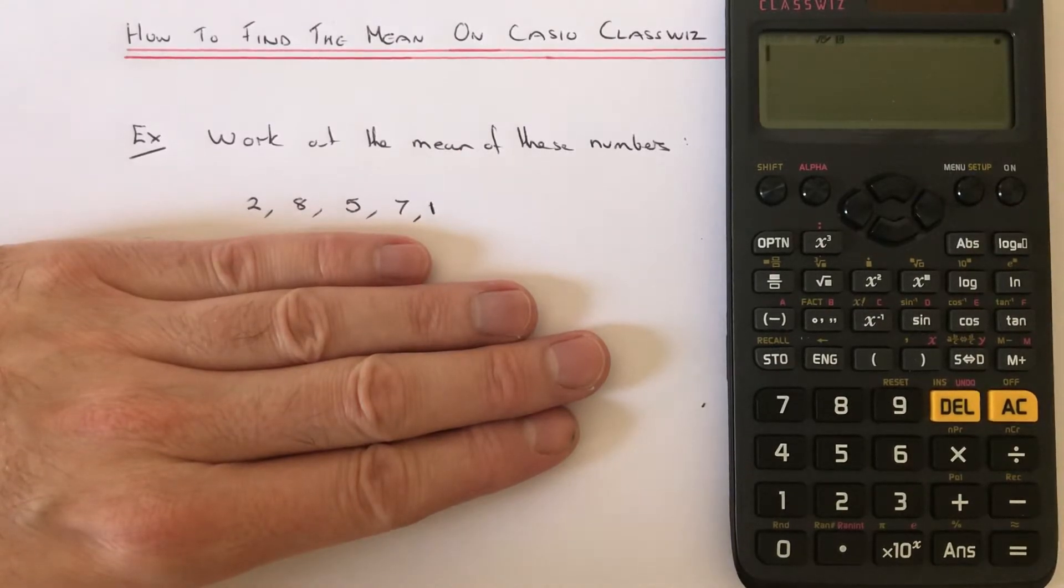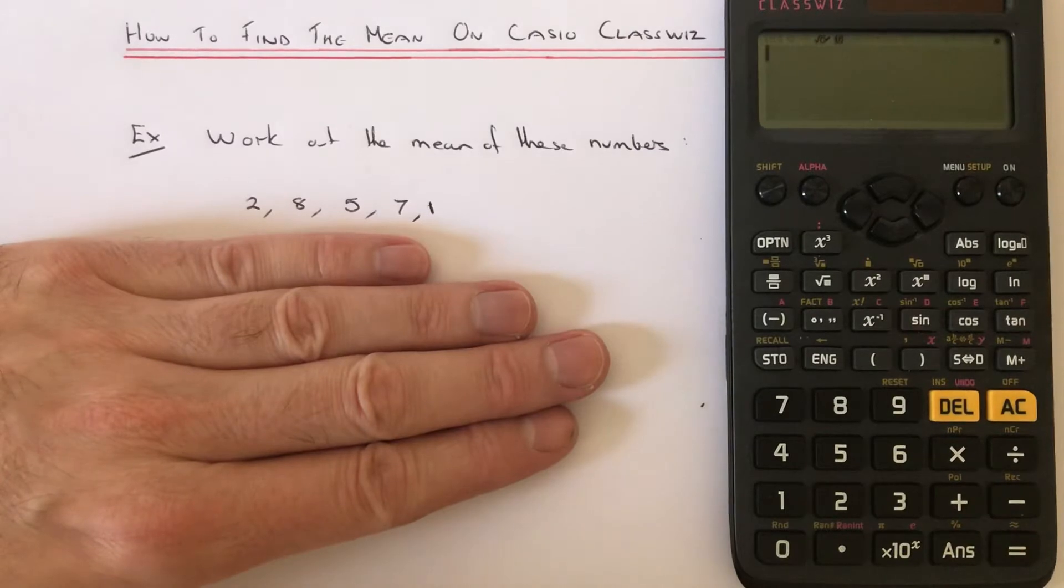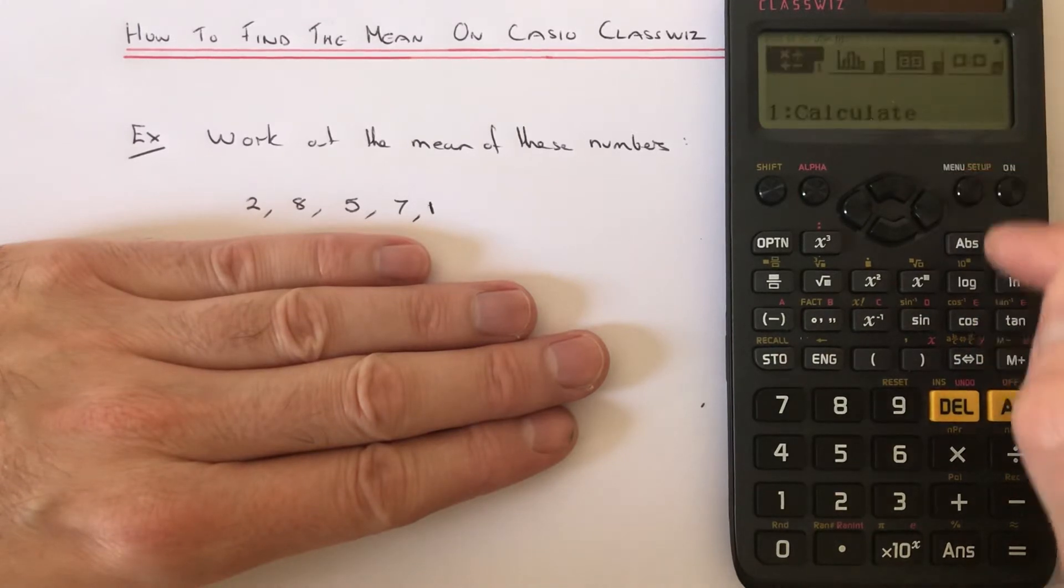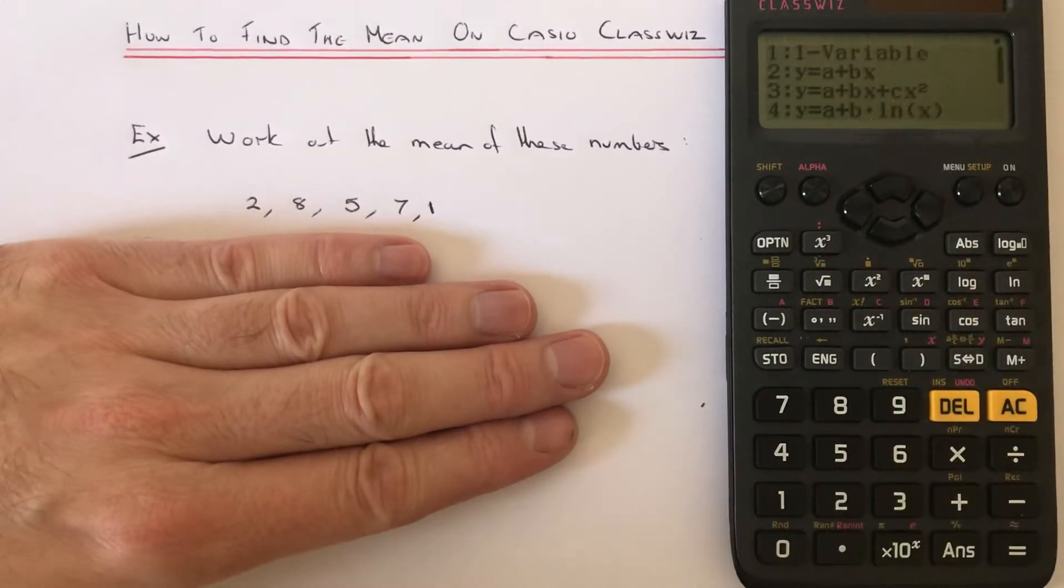So first of all, put your calculator into stats mode. We need to press menu number two and select option one for one variable data.